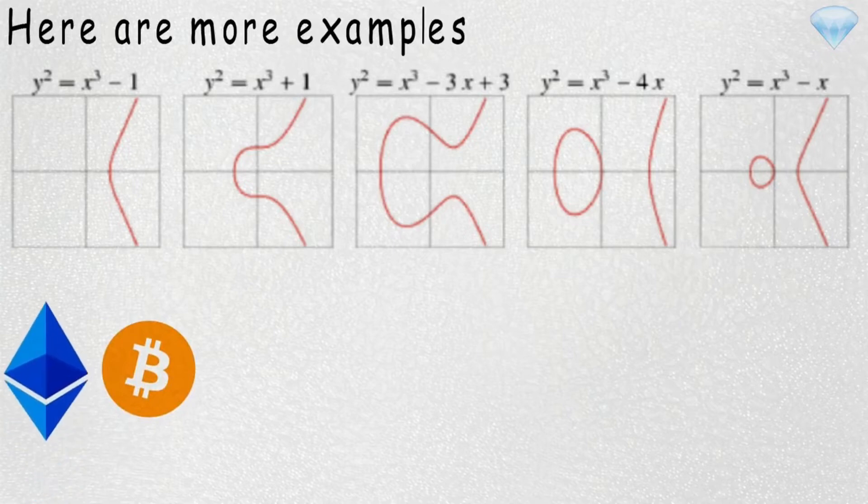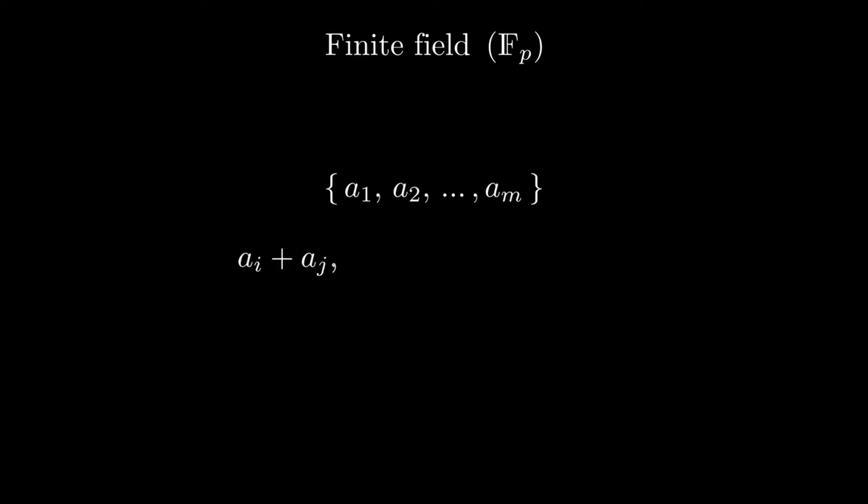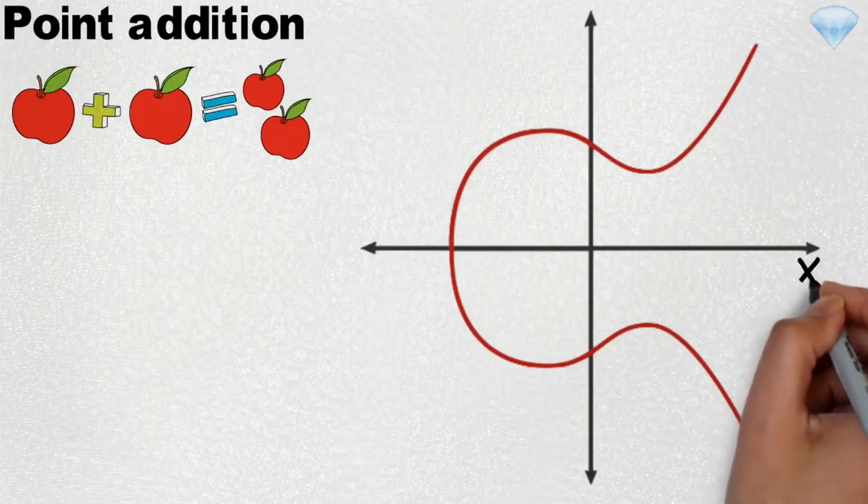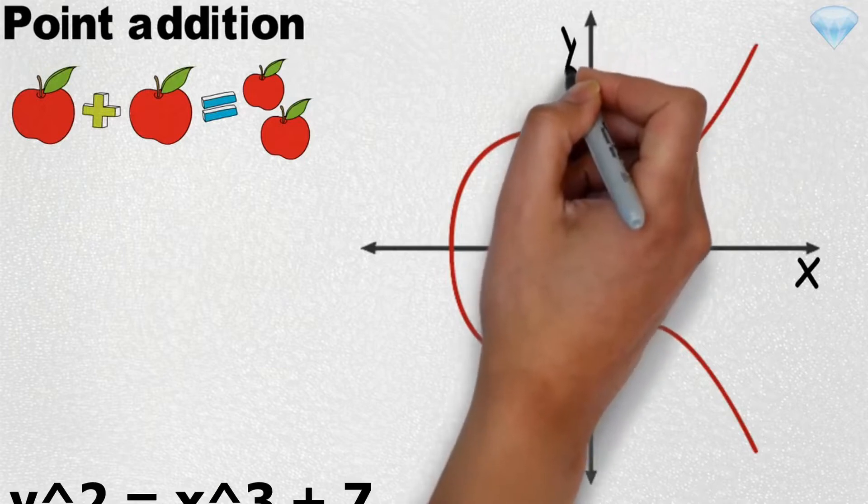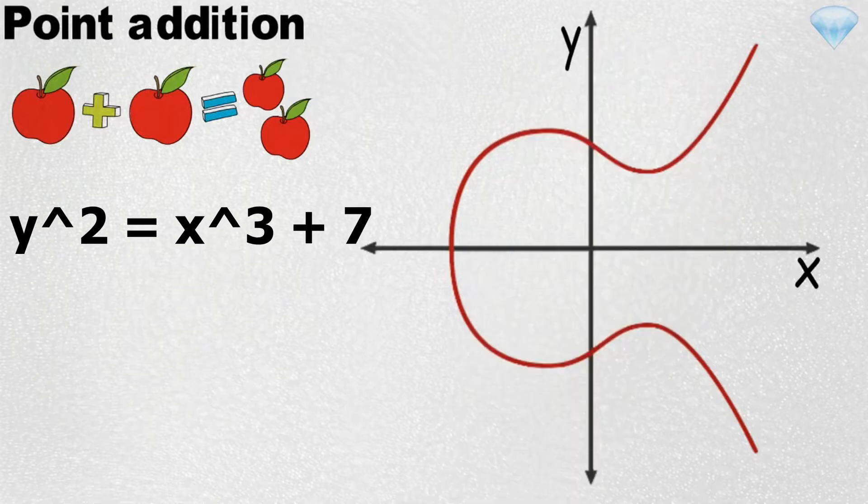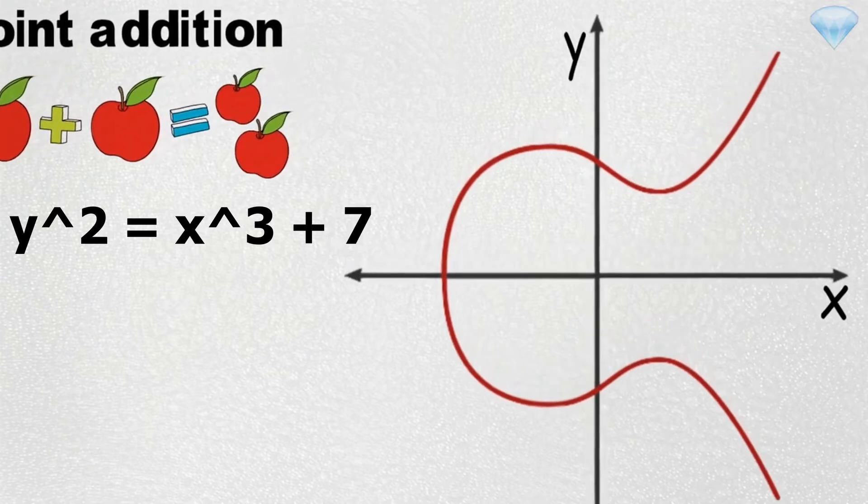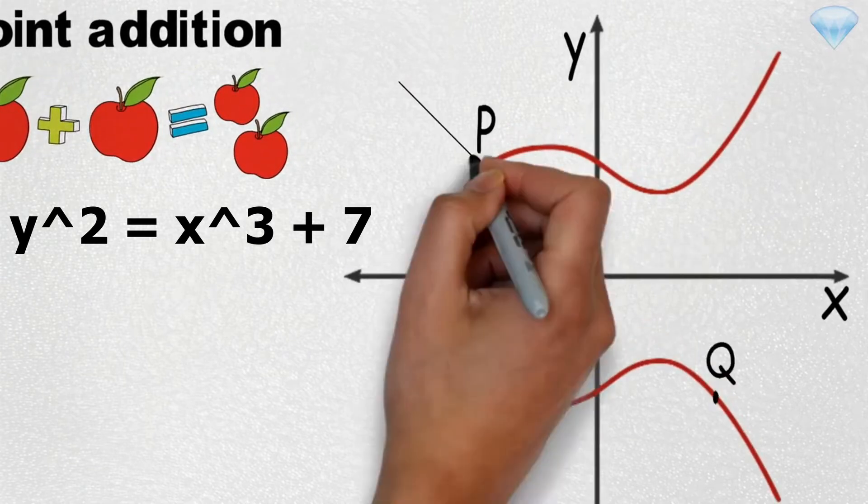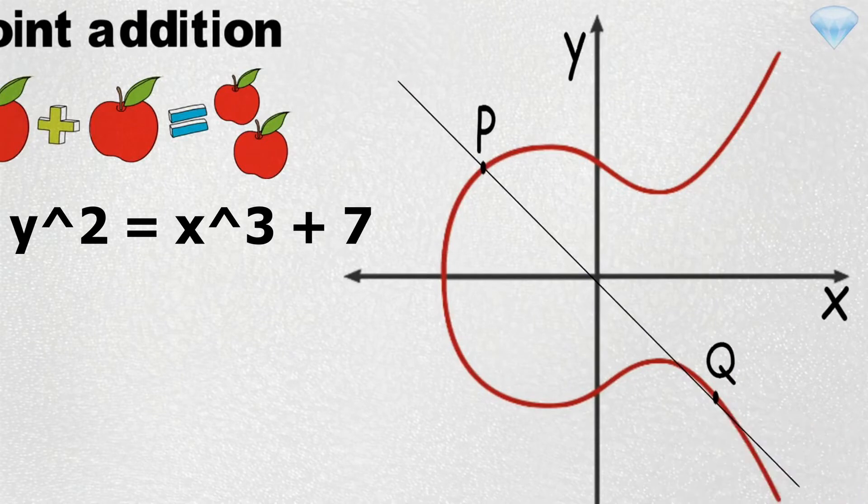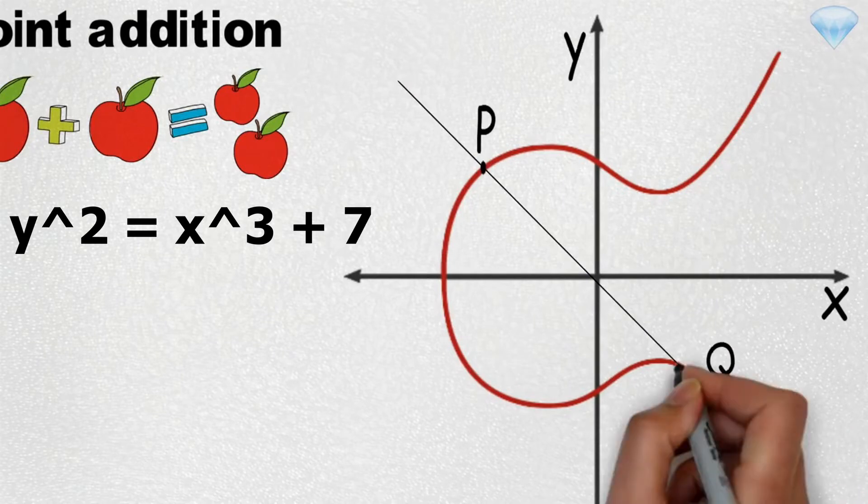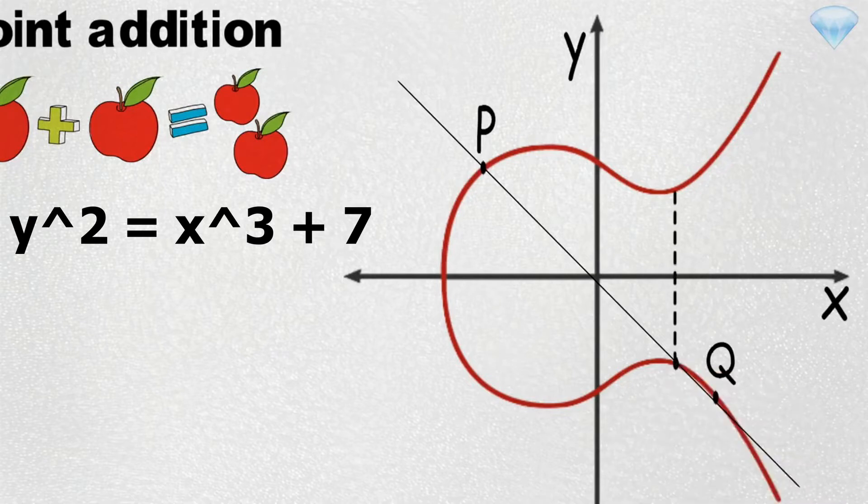They are symmetric about the x-axis, they operate over finite fields in cryptographic settings, and they also have a very interesting quality of having an intuitive way of adding two points on the line. Here is the graph of y-squared equals x-cubed plus 7, the curve that Bitcoin is based on. Here's how you add two points. You draw a line between them, and wherever that line intercepts the curve at the third point, you take that third point and reflect it across the x-axis.